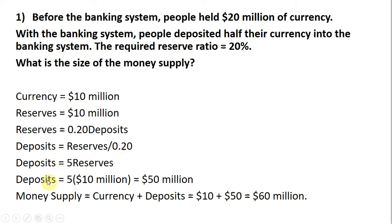What do we know? We know reserves are $10 million. Plugging $10 million into this formula, deposits equals 5 times $10 million, or $50 million. The money supply, then, will equal currency plus deposits. Currency is $10 million, plus the deposits we just solved for, $50 million. So, the money supply equals $60 million.